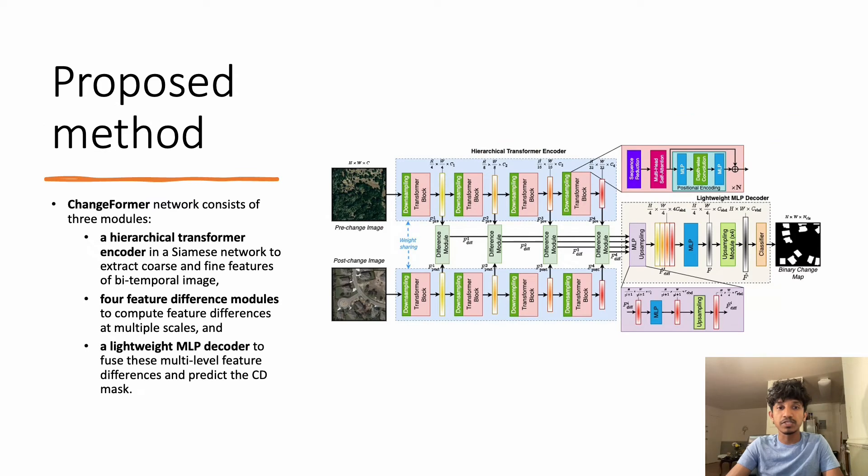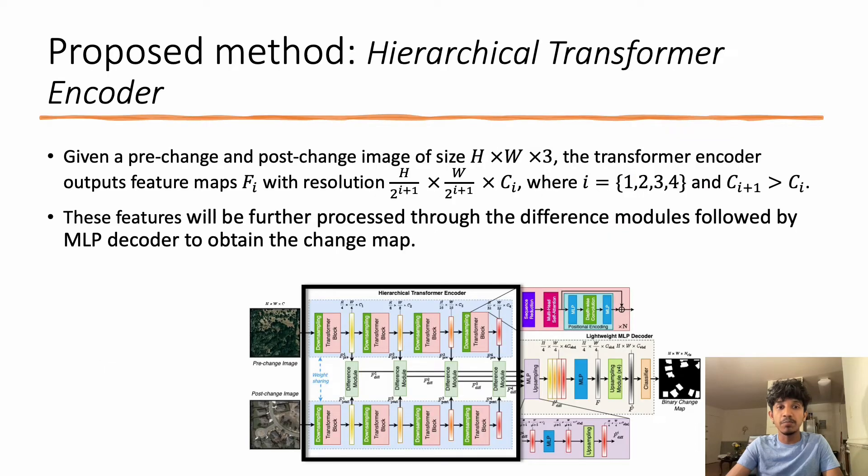The proposed Changeformer network consists of three main modules: a hierarchical transformer encoder in a Siamese network to extract coarse and fine features of bi-temporal images, four feature difference modules to compute feature differences at multiple scales, and a lightweight MLP decoder to fuse these multi-level feature differences and predict the change detection mask.